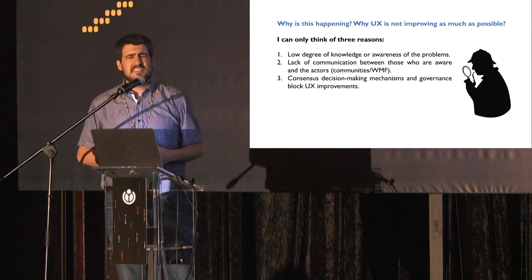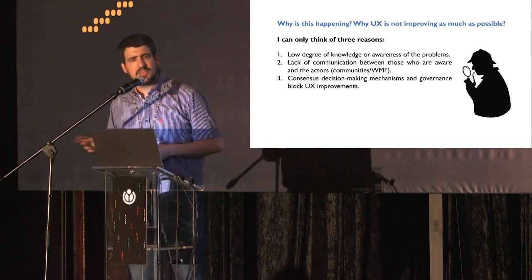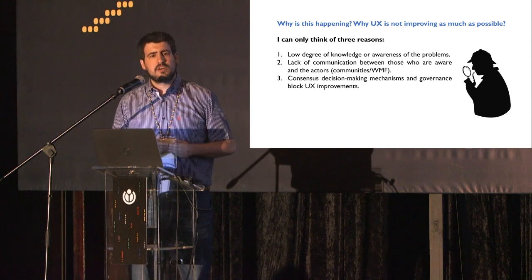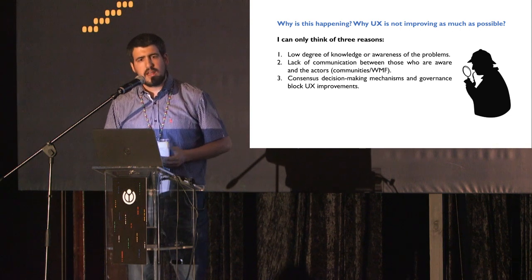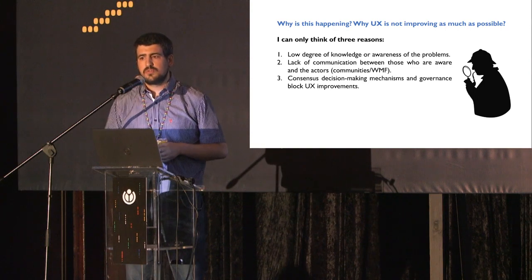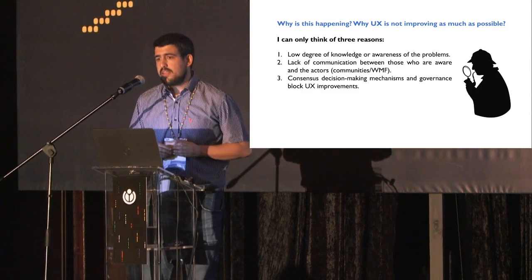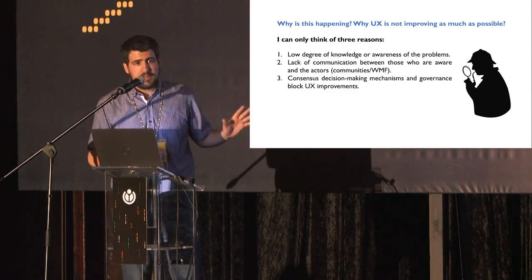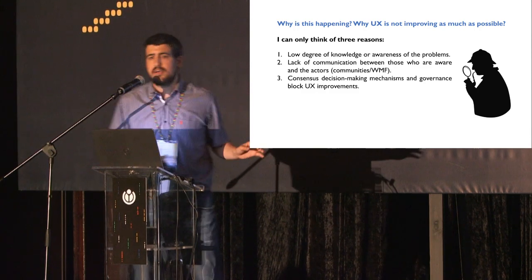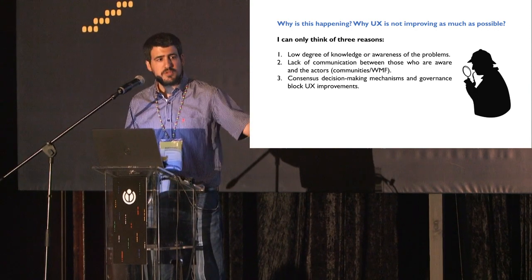So why is this happening? Why do we know there are problems, why do we know there are solutions, why do we know there is software improving user experience, but still we are not getting as far as we would like? I try to be analytical and divide the problem into different steps. The first possible step is that there is a low degree of knowledge or awareness of the problems by the involved actors — the foundation, communities, and chapters.